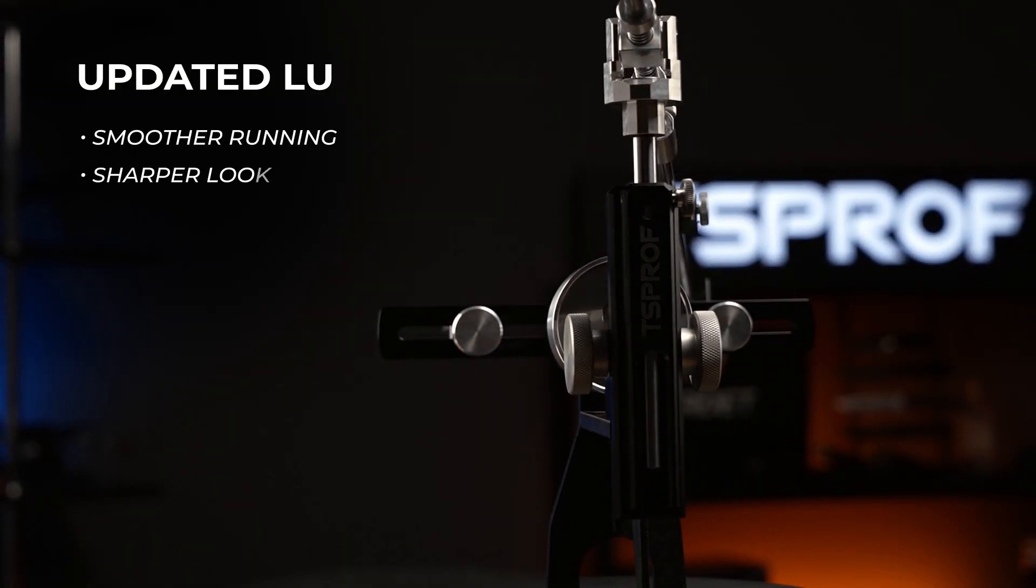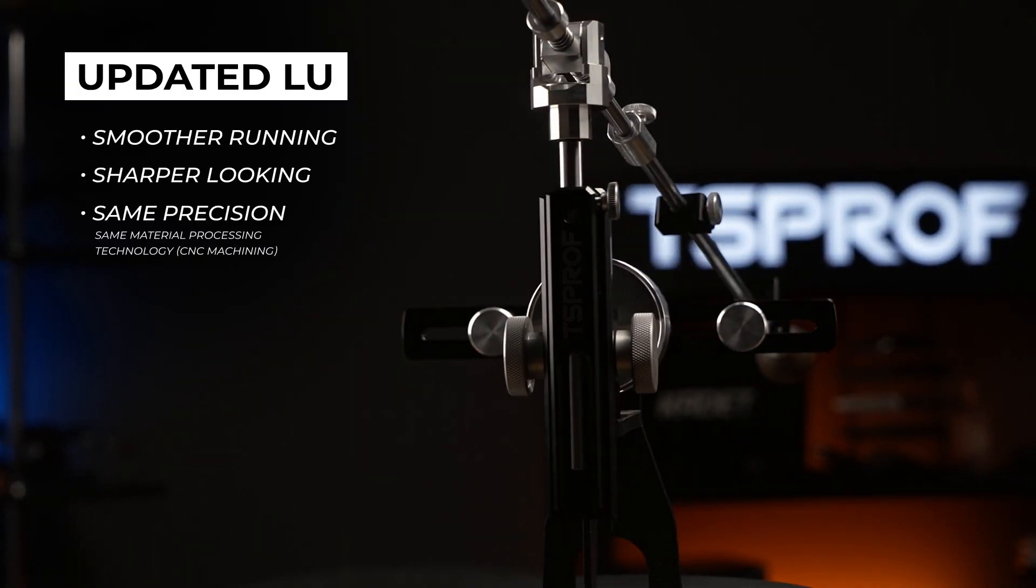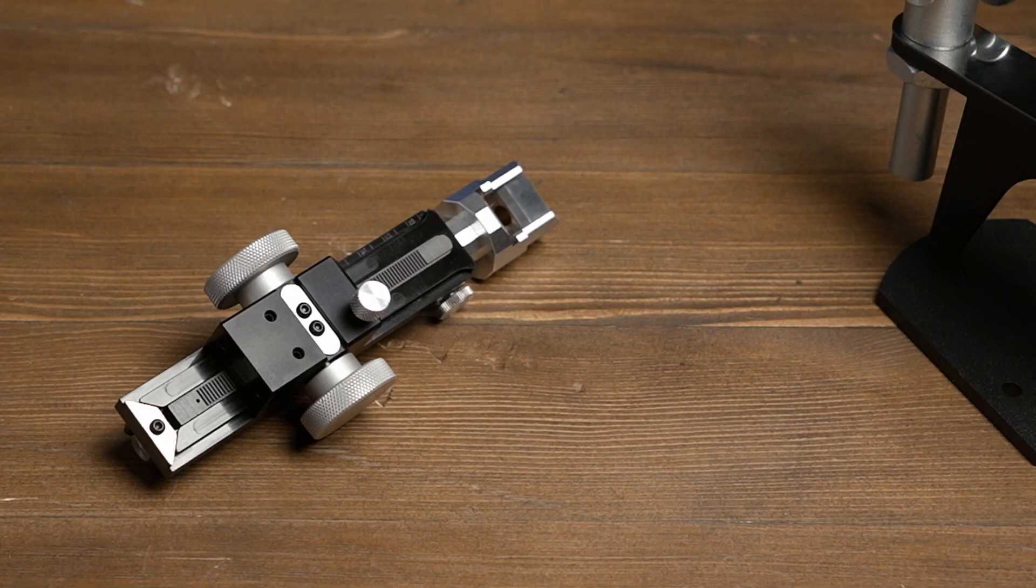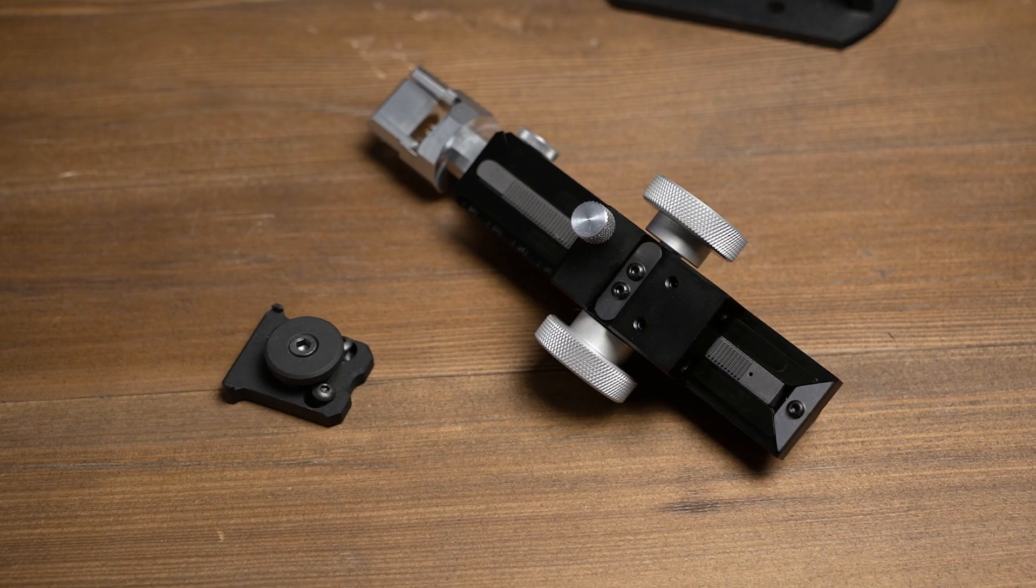From now on, the updated lifting mechanism comes with all new KO3 Pro sharpeners. You can get an upgraded lifting unit as a separate item as well as in the upgrade kit to be able to use that with the previous versions of our sharpeners like KO1 or KO2.